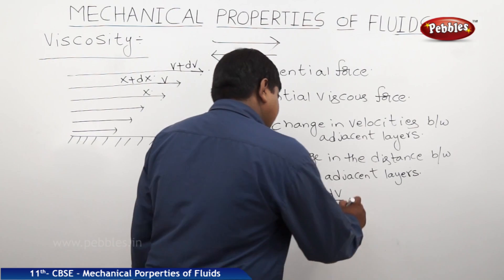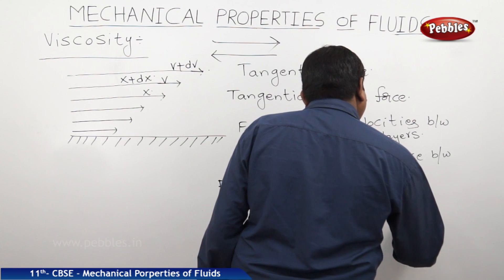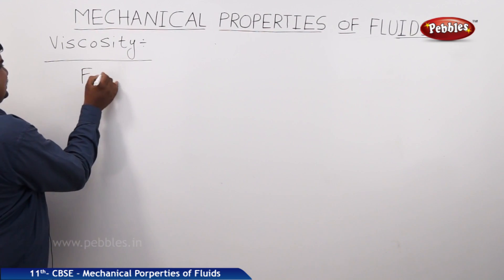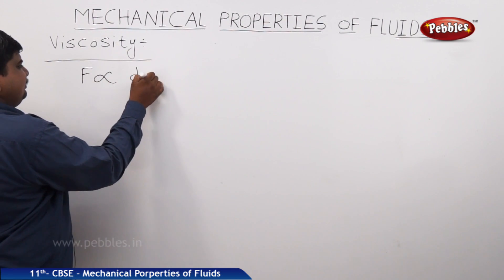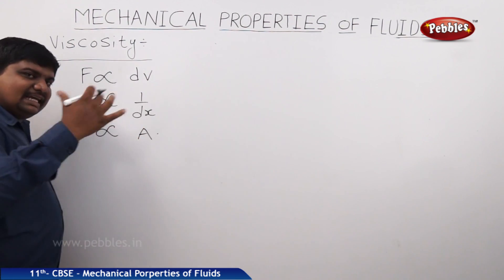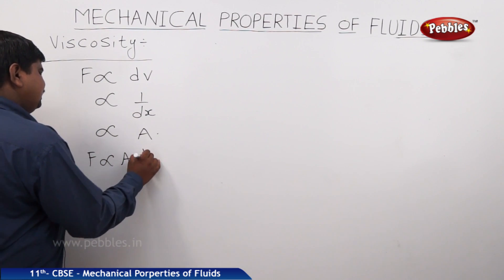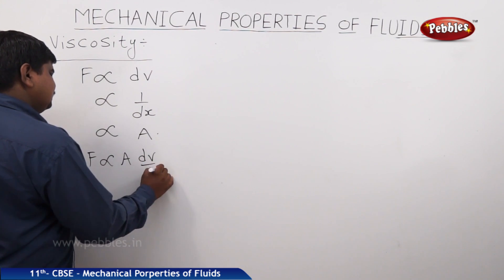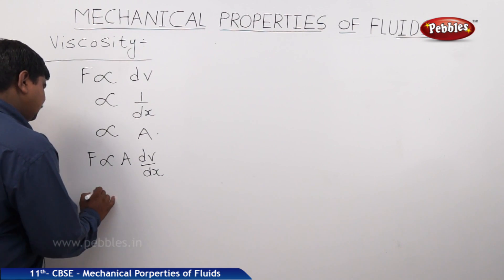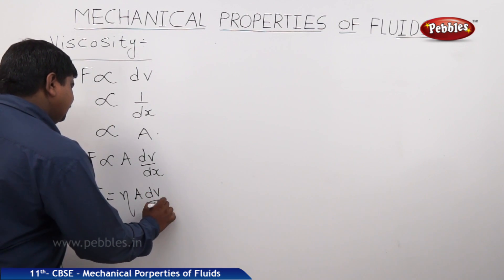Removing the proportionality, F equals eta multiplied by dv by dx. The viscous force is also proportional to the area A of the adjacent layers. Therefore, F equals eta times A times dv by dx. The term dv by dx is the velocity gradient. Here, eta is the coefficient of viscosity.